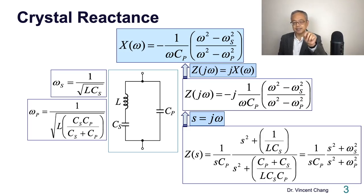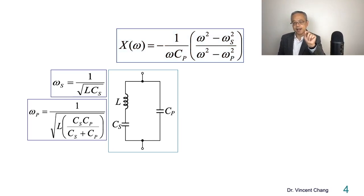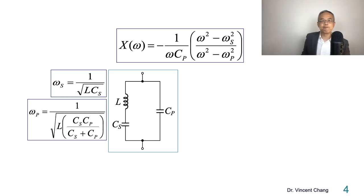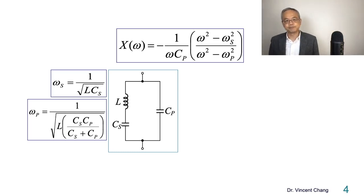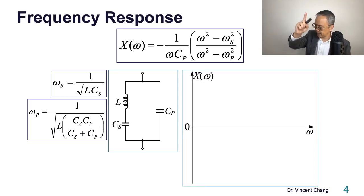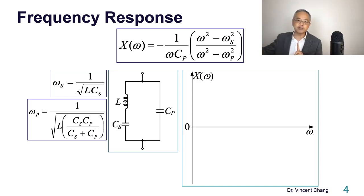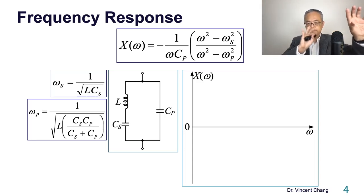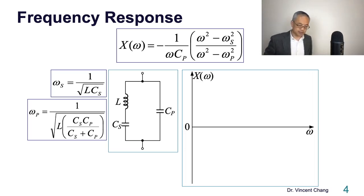Our next task is to find out the frequency dependence of the crystal reactance — in other words, when you increase the frequency from low to very high, how the crystal reactance is going to behave. We cannot solve a crystal oscillator without doing this. So: frequency response. The vertical axis represents the crystal reactance; the horizontal axis represents the frequency. Let's scan from zero frequency (DC) to very high frequency, and examine the two key frequencies: series resonant ωs and parallel resonant ωp.